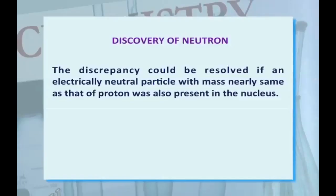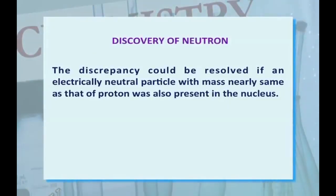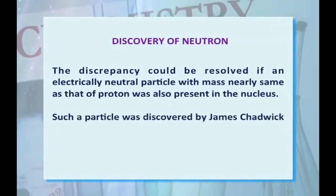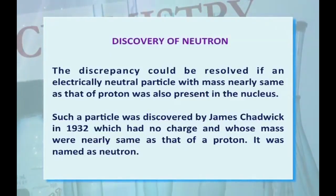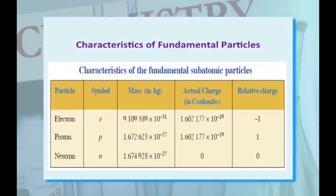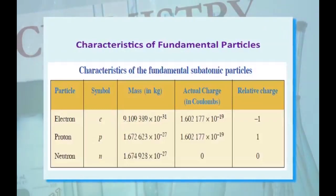Discovery of neutron. The discrepancies could be resolved if an electrically neutral particle with mass nearly the same as that of a proton was also present in the nucleus. Such a particle was discovered by James Chadwick in 1932, which had no charge and whose mass was nearly the same as that of a proton. It was named the neutron. A table shows the different particles — electrons, protons, and neutrons — their symbols, mass, charge, and actual charge in Coulombs.